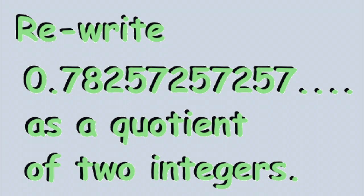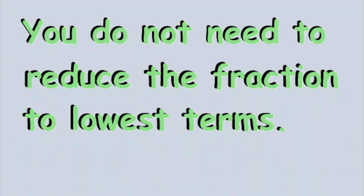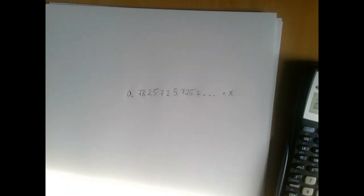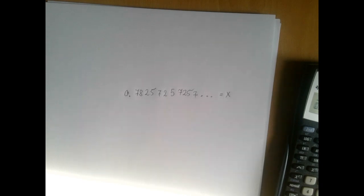We have a repeating decimal and we need to prove that it's rational by rewriting it as a quotient of two integers. Let's call this strange number x. We're not going to get there right away. The first goal is just to eliminate the infinite repeating block.